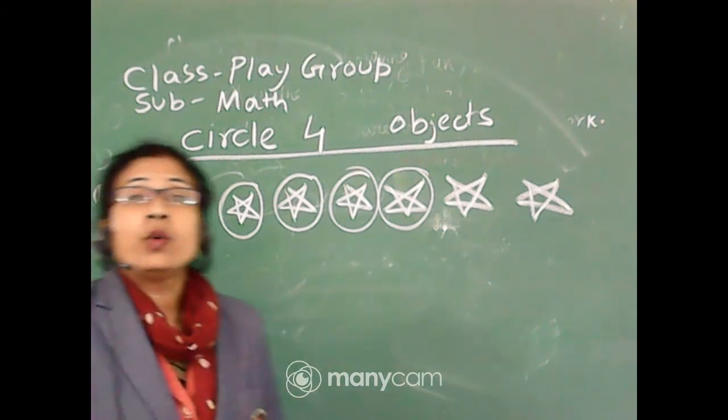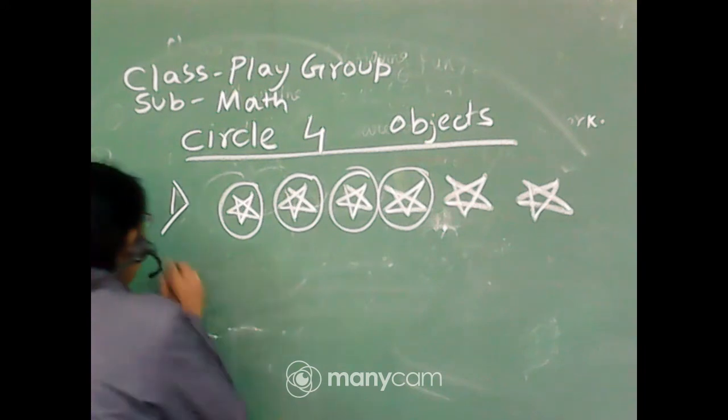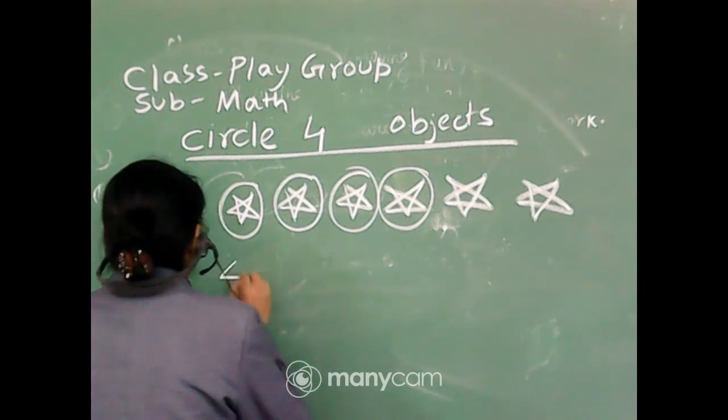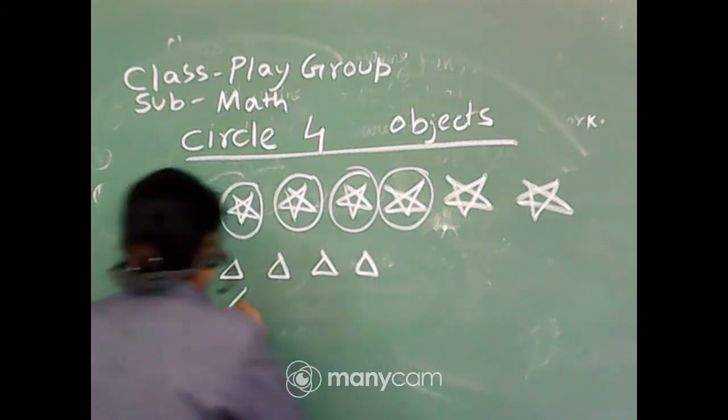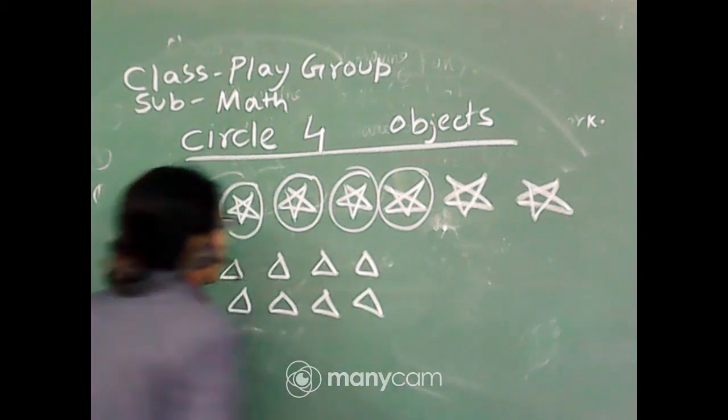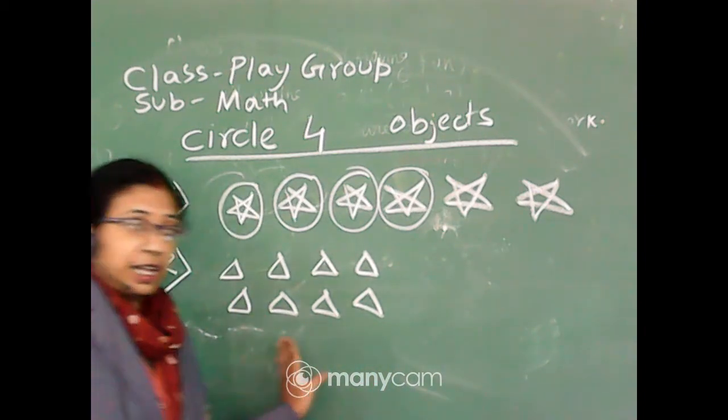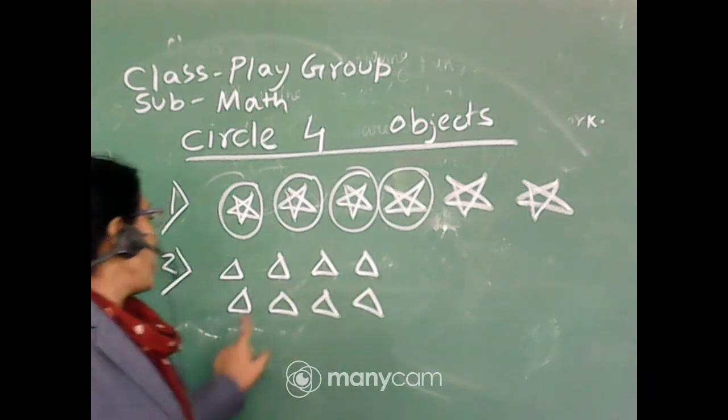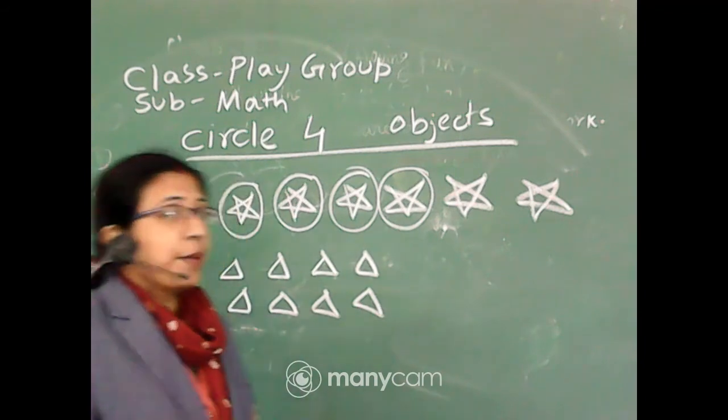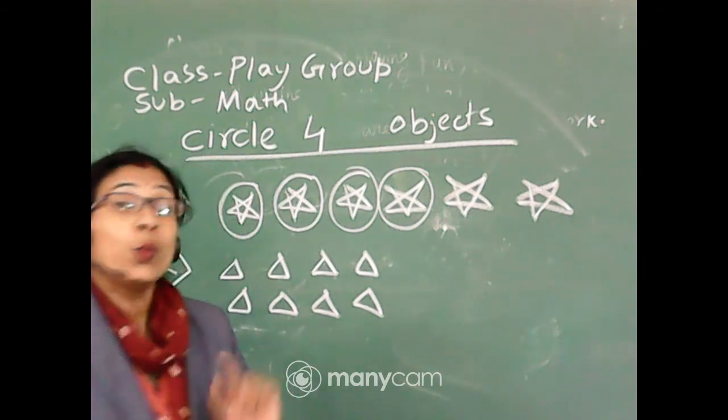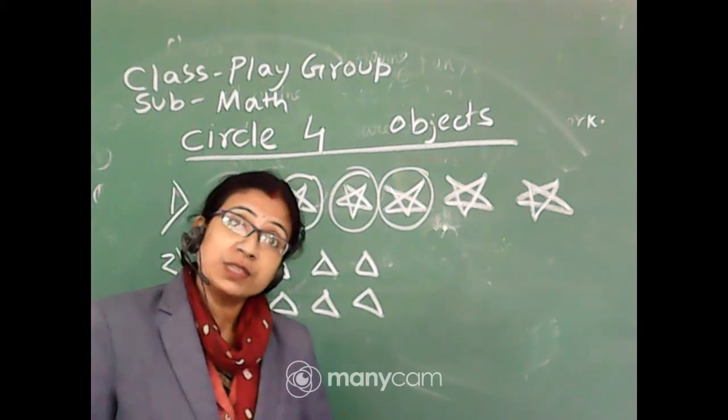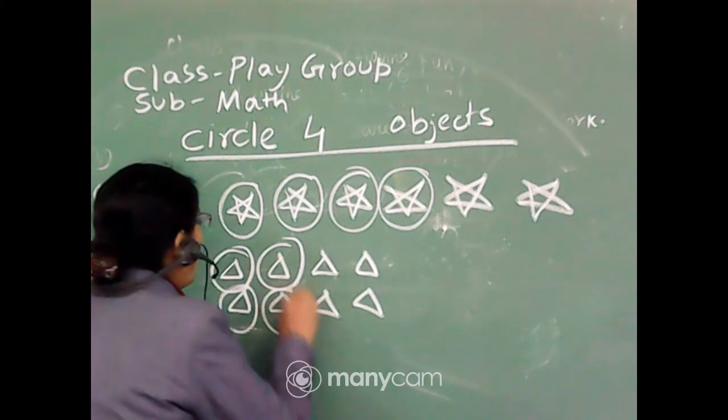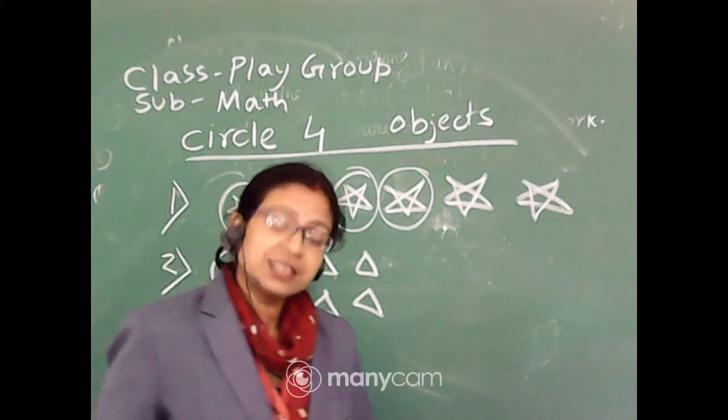Now next, number two, same heading we are following. Some triangles are there. Count, at first you have to count. How many triangles are there? One, two, three, four, five, six, seven, eight. Eight triangles are there. But what we have to do, student? Yes, we have to circle out only four objects. So we circle: one, two, three, four. We circle out four objects.